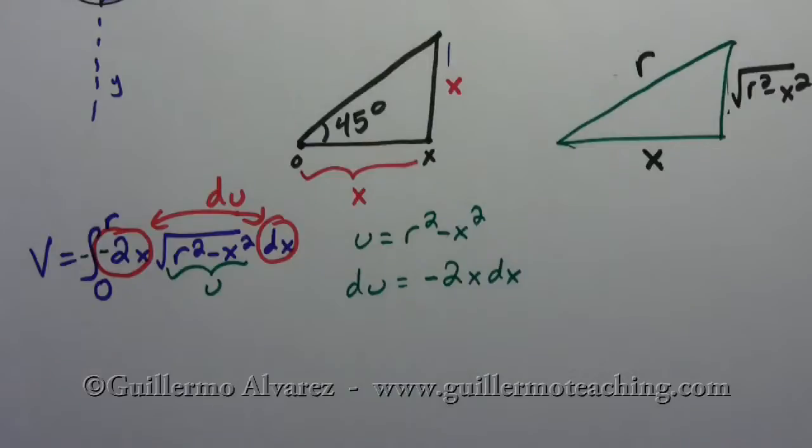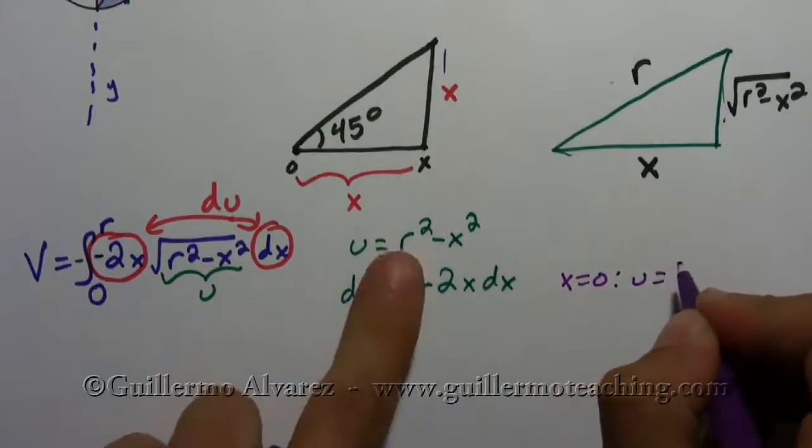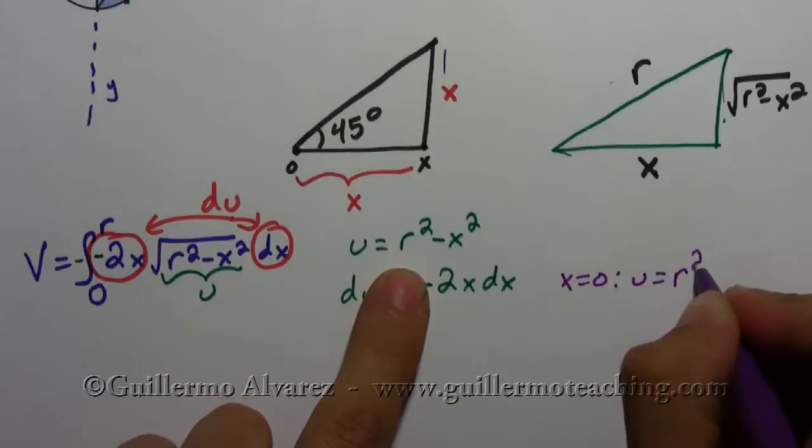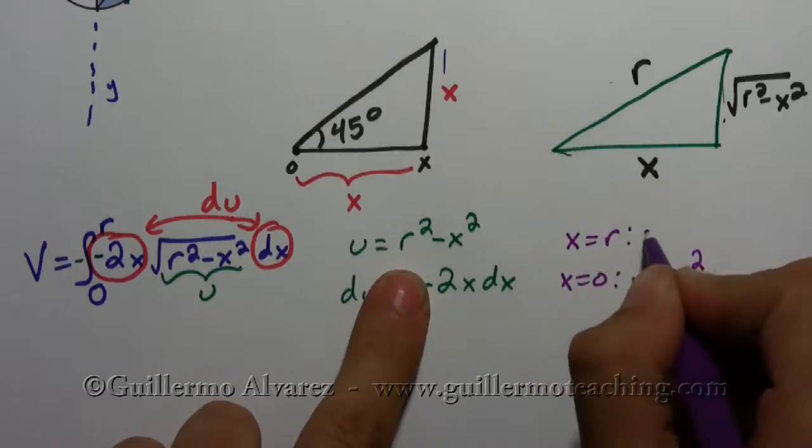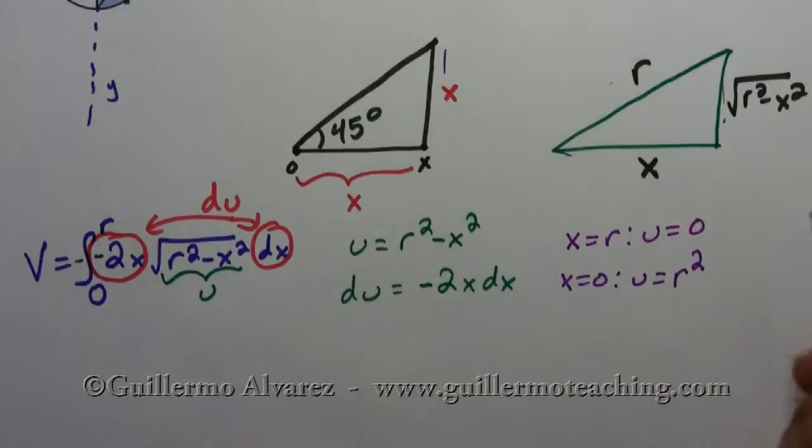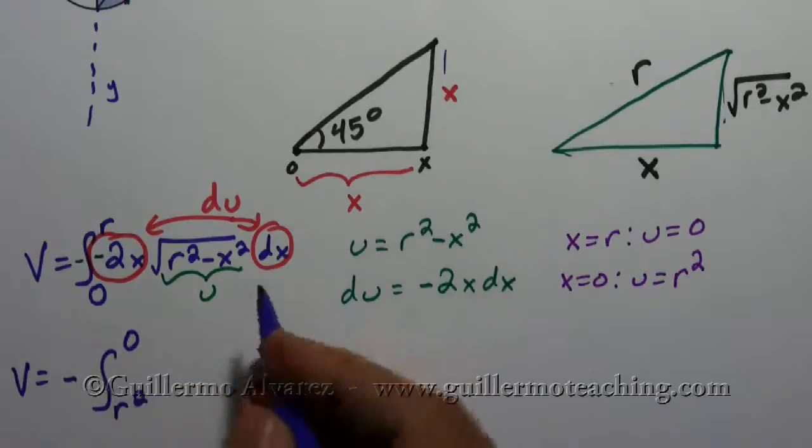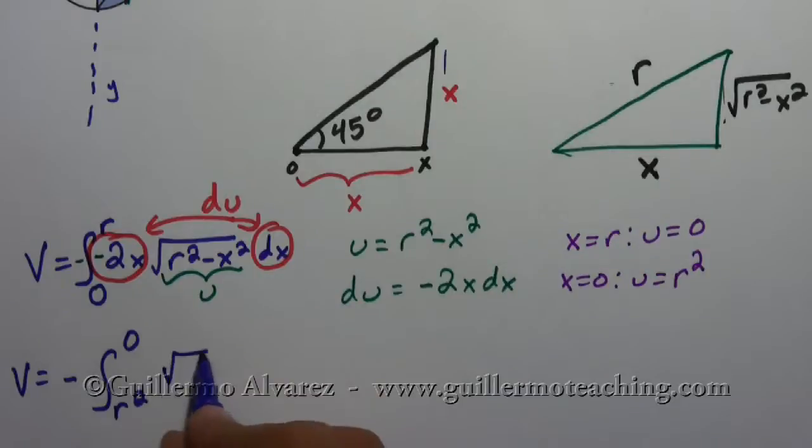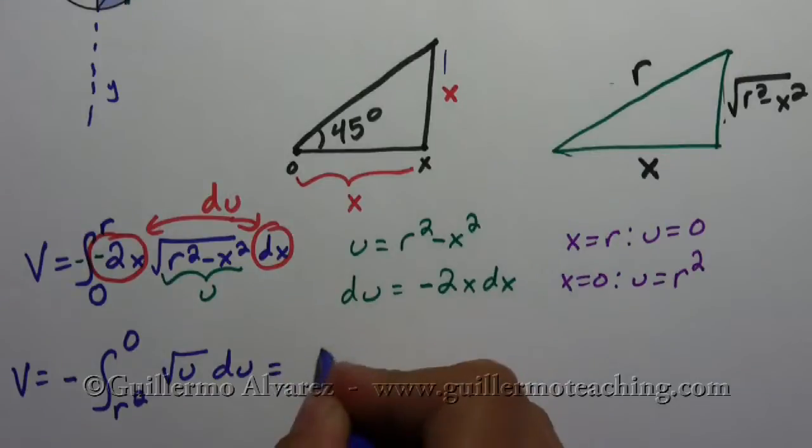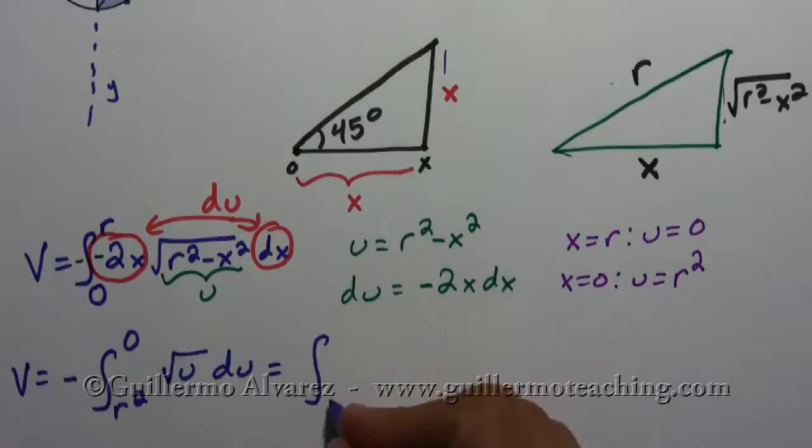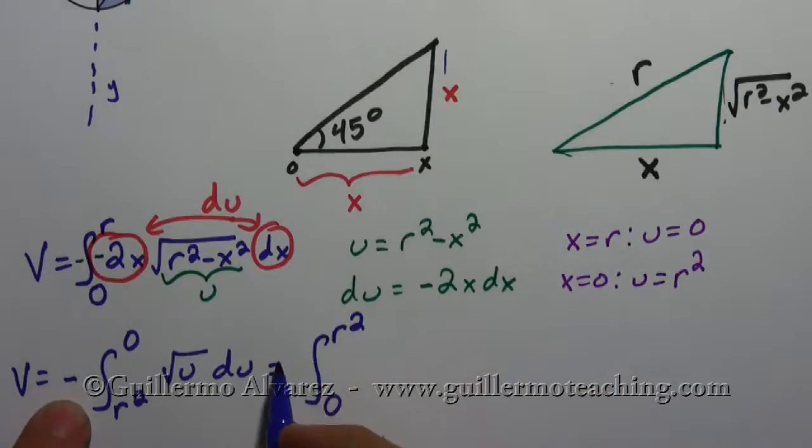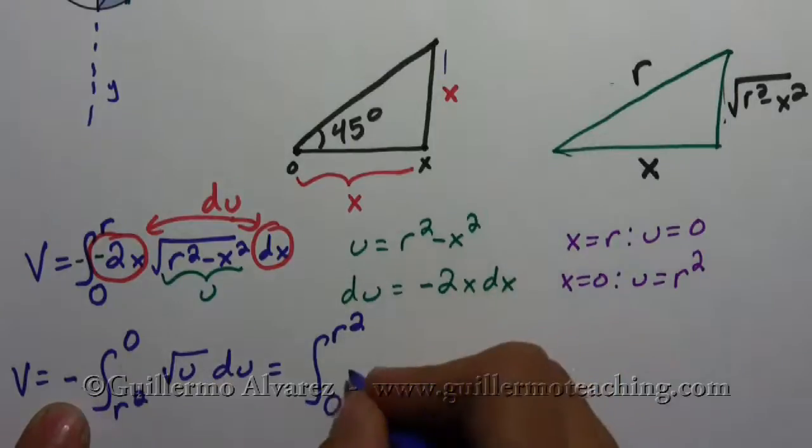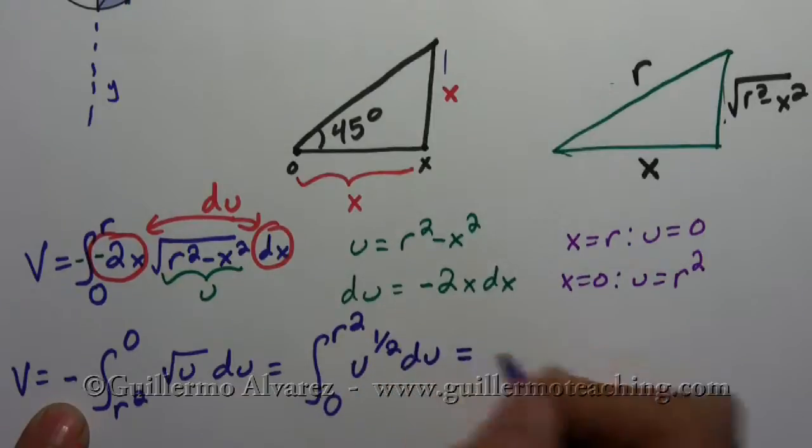And then all I need to do is change the limits of integration. So if x is equal to 0, u is going to equal r squared. And if x is equal to r, then u is going to equal 0. So this is the volume is then equal to minus the integral from r squared to 0 of square root of u du. And then actually I'm better off using the properties of integration. I can switch this from 0 to r squared by switching the sign on the outside. And so the negative on the outside would turn into a positive. And then let me change that to u to the 1 half du.